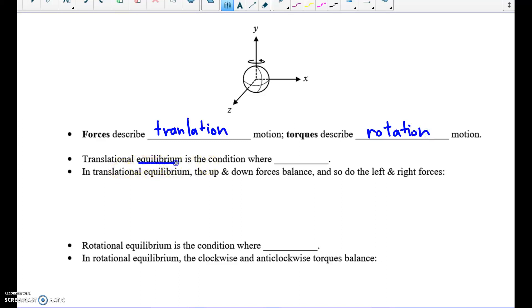Translational equilibrium and rotational equilibrium, we'll see. Translational equilibrium means the net force, if you add them all up, the net is zero. Rotational equilibrium means something very similar. The net torque is zero.